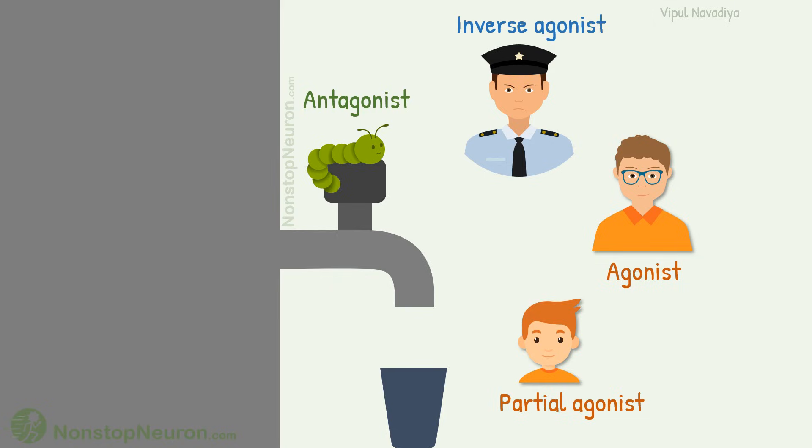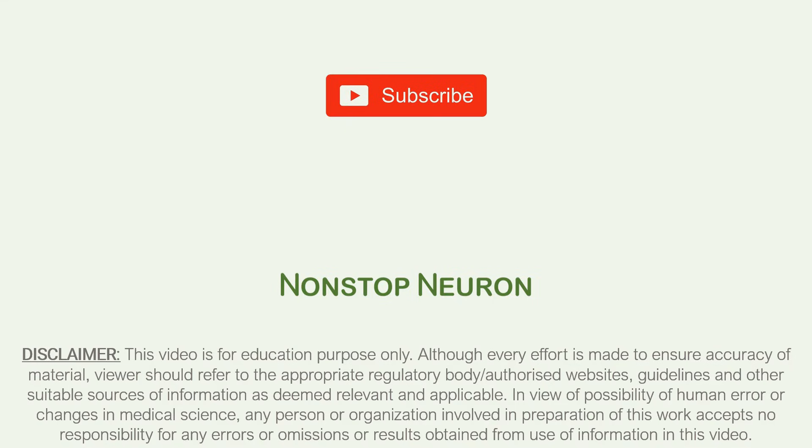I hope this makes the concept of agonist, partial agonist, antagonist and inverse agonist very clear. That's it for this video. If you feel this video will help your friends and colleagues, share it with them too. And don't forget to subscribe because lots more to come. At Nonstop Neuron, learning medical concepts is as easy as watching cartoons. Thanks for watching. See you in next video.